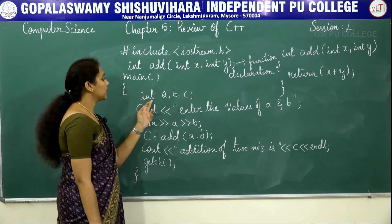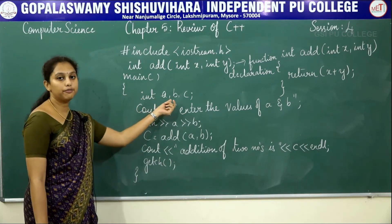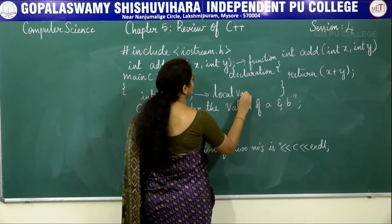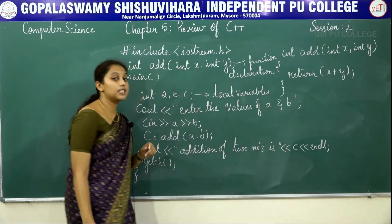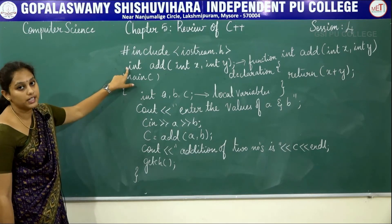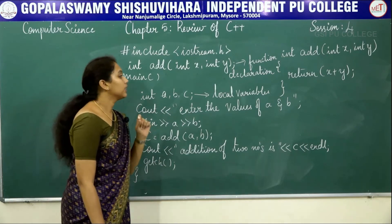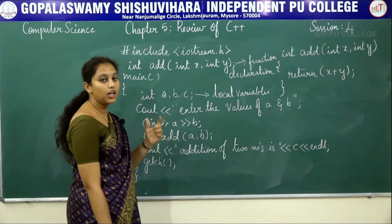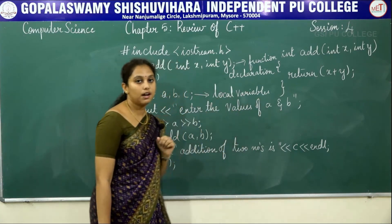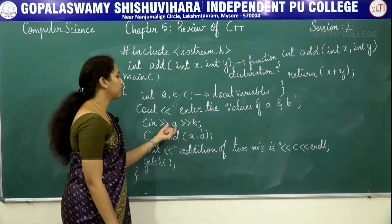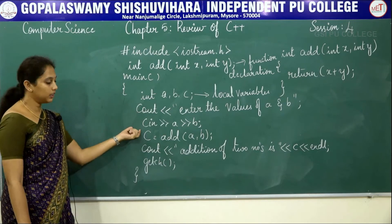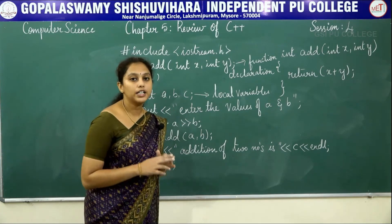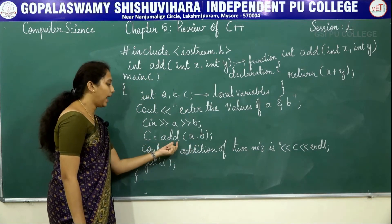Inside void main, we declare 'int a, b, c'. These variables are declared within this block, hence they are called local variables. If we declare any variables in the global declaration section, those are called global variables. Next, cout asks the user to enter the values of a and b. After accepting the values, we are calling the function to perform addition of two numbers: c = add(a, b).